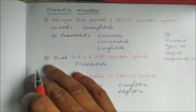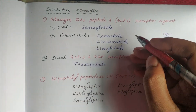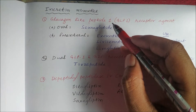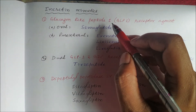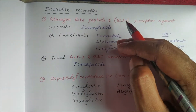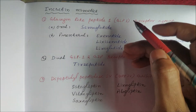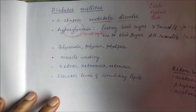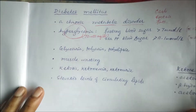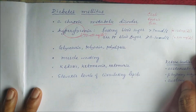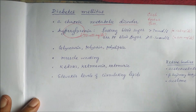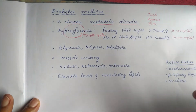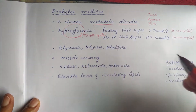Today we will study Incretin Mimetics. These Incretin Mimetics are nothing but your anti-diabetic agents — both oral and parenteral agents are there. They are used in diabetes mellitus. Diabetes mellitus is a chronic metabolic disorder characterized by hyperglycemia.